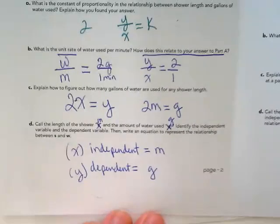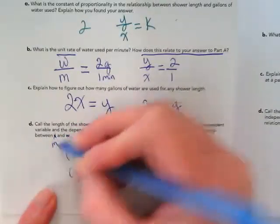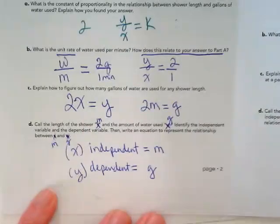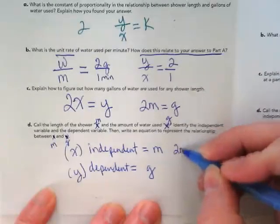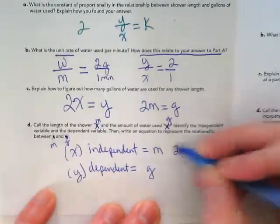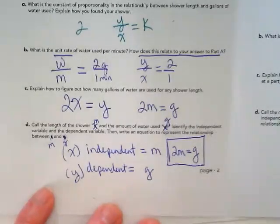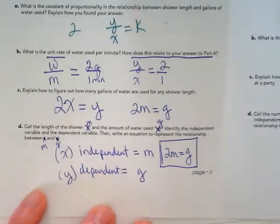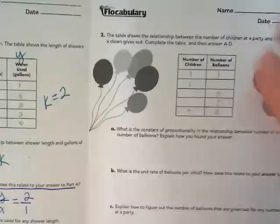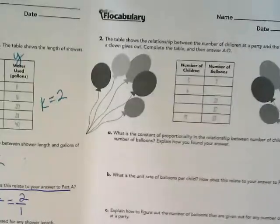It says, and then write an equation to represent the relationship between minutes and gallons. Well, we already did that up above, didn't we? This is our equation. Two times the minutes equals our gallons. That's our equation. So I'm going to stop talking now and let you guys do page two, which is very similar. And, I'm sorry, not page two. Problem two on page three and page four.